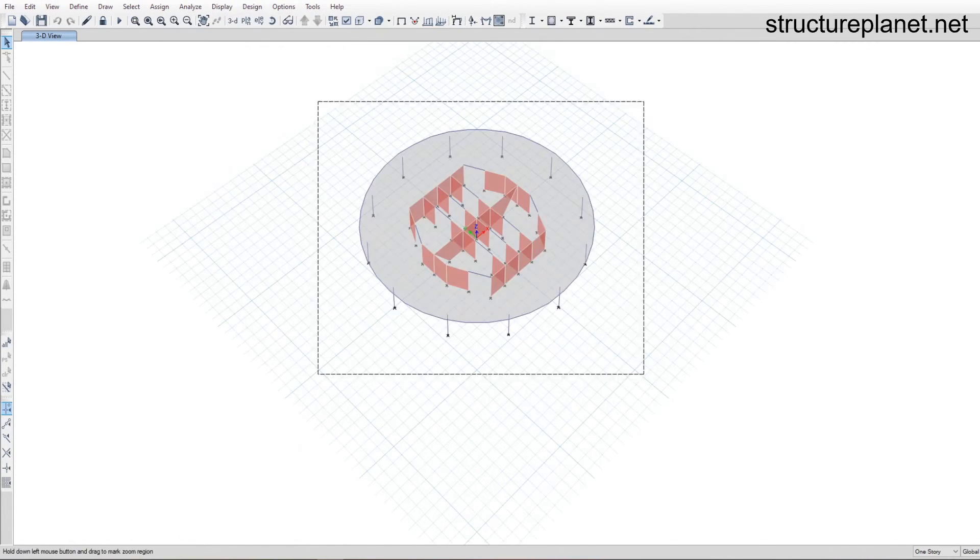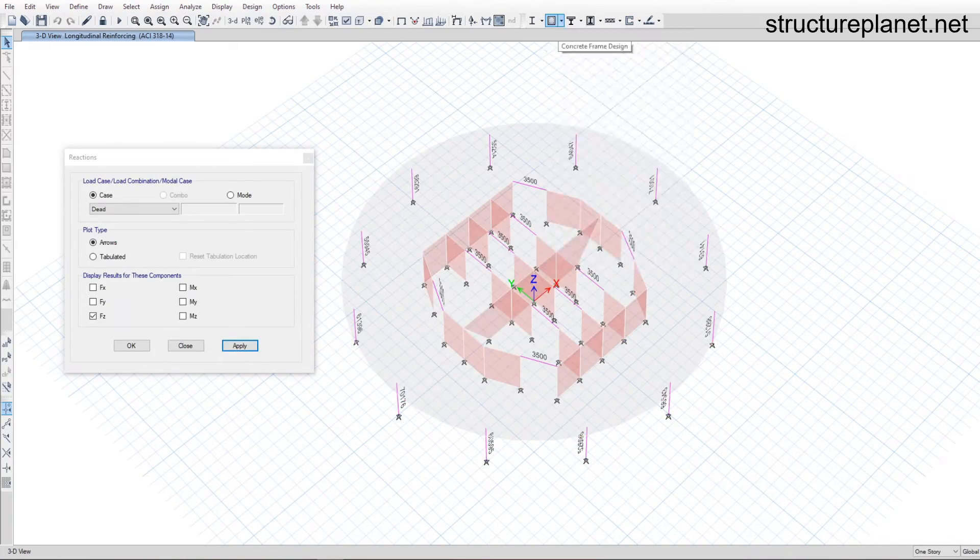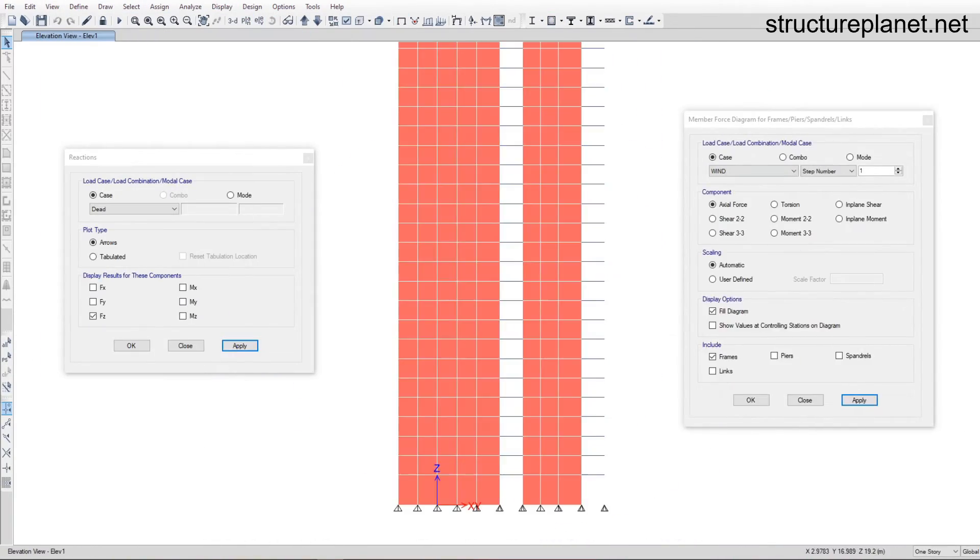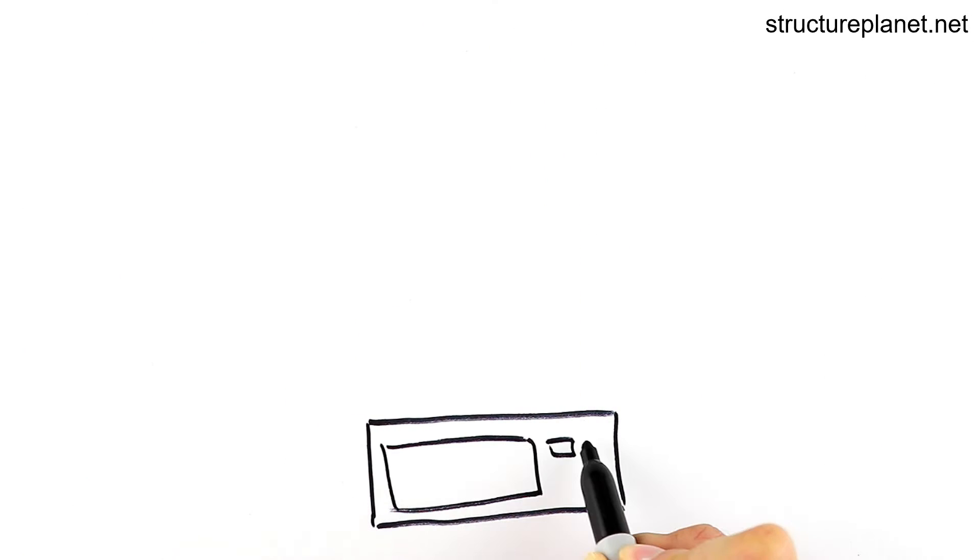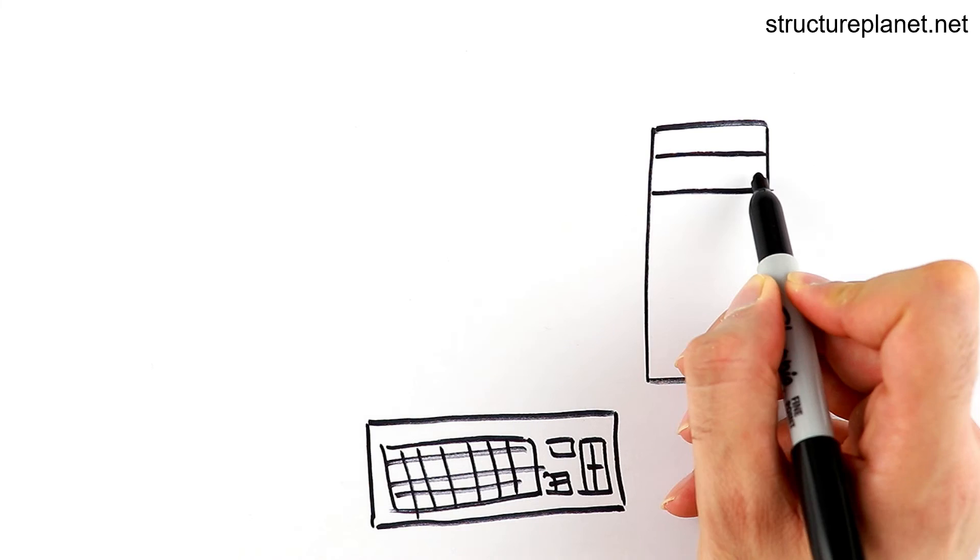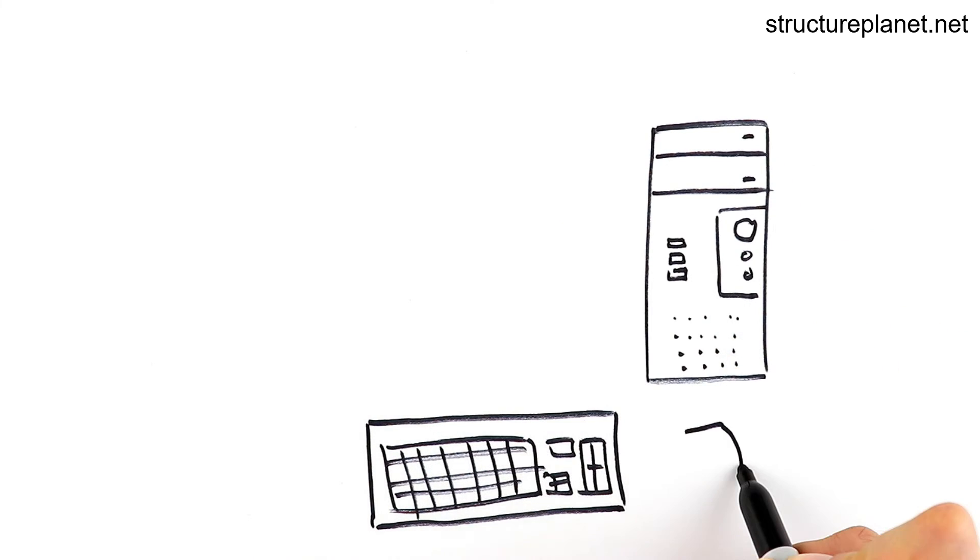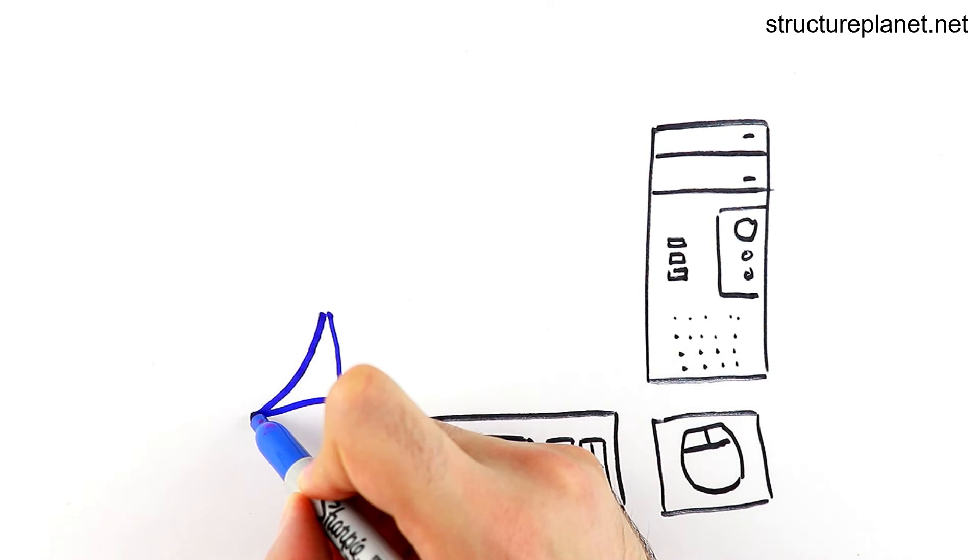Once satisfied with the design results, engineers will then proceed to the drawing production stage. There is something important to add here. While computers automate parts of the building,